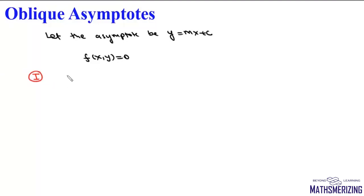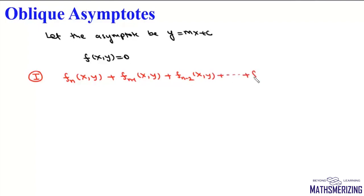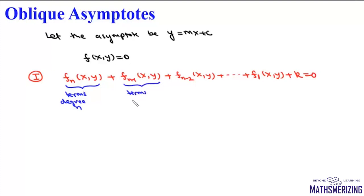The first step is to write the curve as: f_n(x,y) + f_{n-1}(x,y) + f_{n-2}(x,y) + ... + f_1(x,y) + k = 0, where f_n contains all terms of degree n, f_{n-1} contains all terms of degree n-1, f_{n-2} contains all terms of degree n-2, down to degree 1 terms and the constant.